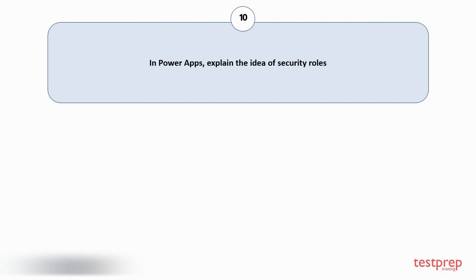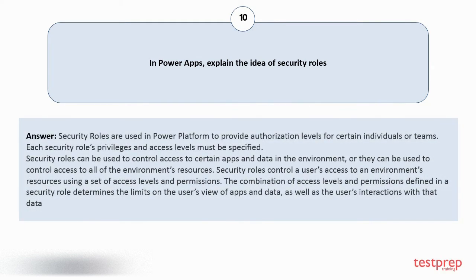Question number 10. In Power Apps, explain the idea of security roles. Security roles are used in Power Platform to provide authorization levels for certain individuals or teams. Each security role's privileges and access levels must be specified. Security roles can be used to control access to certain apps and data in the environment, or they can be used to control access to all of the environment's resources.